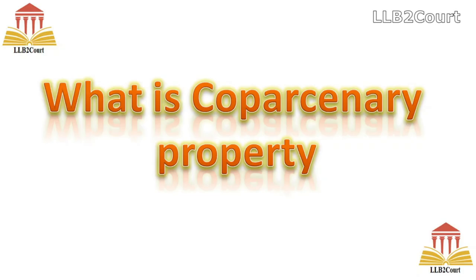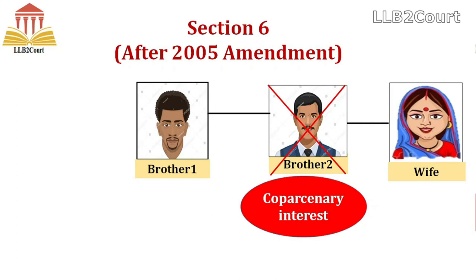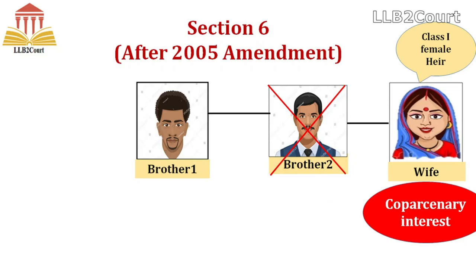Now let's see the changes made after the 2005 amendment. The coparcenary interest of Brother 2 will not go to Brother 1 based on survivorship. Instead, it will go to his wife, because she belongs to Class 1 female heirs. Suppose Brother 2 also has a mother, daughter, or pre-deceased daughter's son — they will also share that coparcenary interest. The coparcenary interest now goes to female heirs belonging to Class 1 of the schedule of the Act.